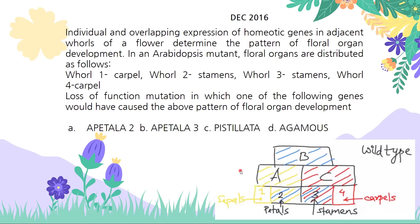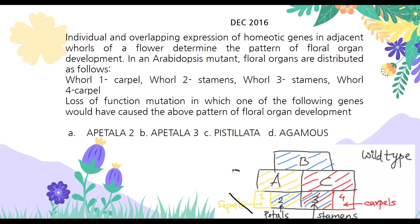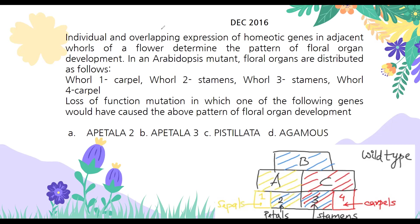The pattern is carpel, stamen, stamen, carpel — so instead of sepals we have carpels, and instead of petals we have stamens. This is actually what happens when A is absent, because A is responsible for sepals and petals and we have neither. So it is definitely a mutant for class A. Class A includes Apetala1 and Apetala2, and since Apetala2 is in the options, Apetala2 is the correct answer.